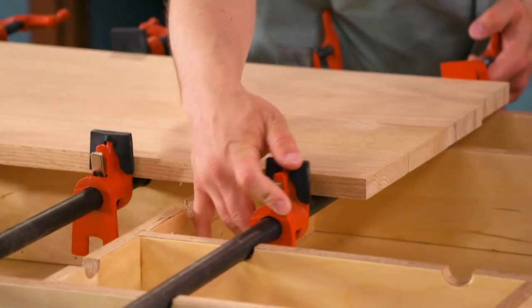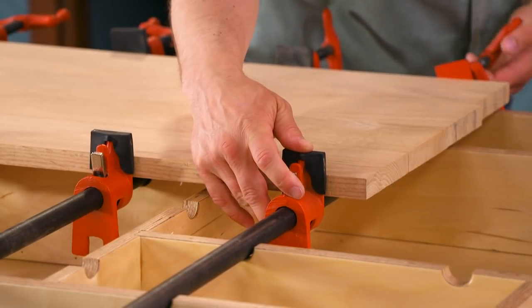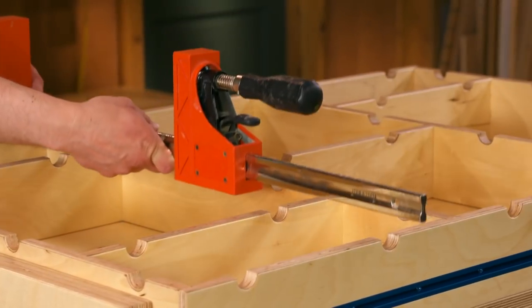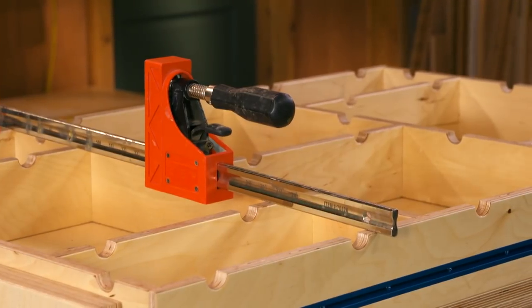These half rounds can be drilled to accommodate any size bar clamp you may have readily available. It's worth mentioning that these half round channels can be substituted for dado grooves to accommodate Bessey's K-body clamps.